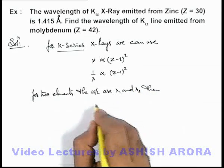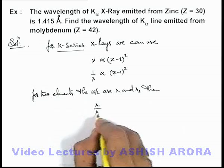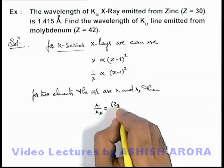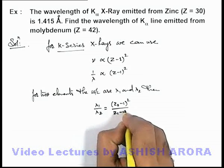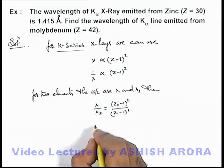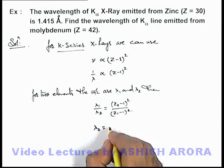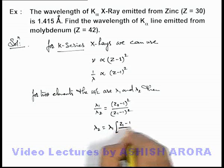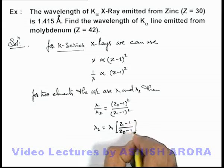Then we can use: lambda 1 by lambda 2 is equal to (Z2-1)² by (Z1-1)², and here the value of lambda 2 we can write as lambda 1 multiplied by (Z1-1) by (Z2-1) squared.